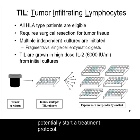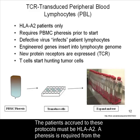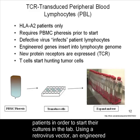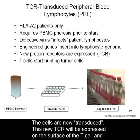The second main type of ACT protocols involves TCR transduced PBL. The patients accrued to these protocols must be HLA-A2. A phoresis is required from the patients in order to start their cultures in the lab. Using a retrovirus vector, an engineered T cell receptor, or TCR, is inserted into the genome of the patient's cells. The cells are now transduced. This new TCR will be expressed on the surface of the T cell and will allow it to find and recognize the patient's tumor cells.